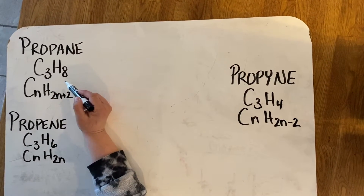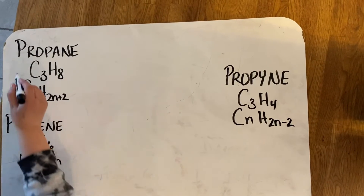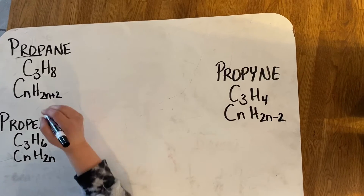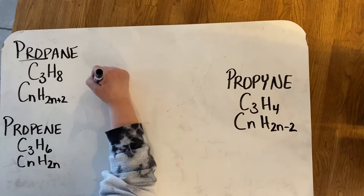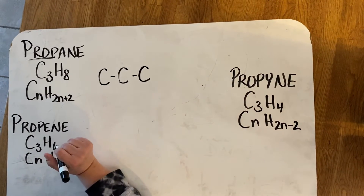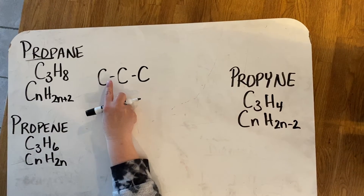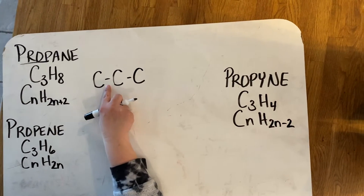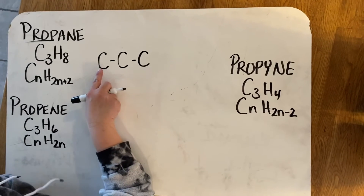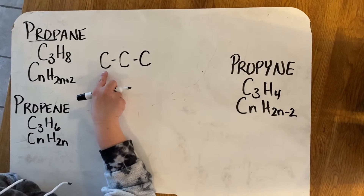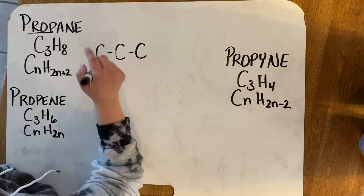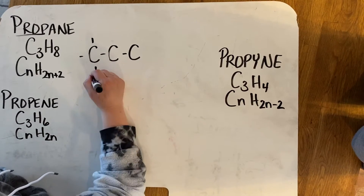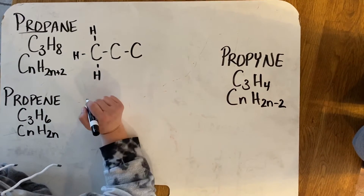I wrote the formulas out already and I want to show you how to draw them. They're all 'prop,' and that tells me there are three carbons. When drawing propane, the carbons are connected to each other, so draw your three carbons right away. Because it's an alkane, those carbon-carbon bonds are single bonds only. Now think about how many more bonds each carbon needs to reach the octet. That bond is two electrons, and he needs to get to eight, so he'll need three more bonds — and in each location I'll put a hydrogen.